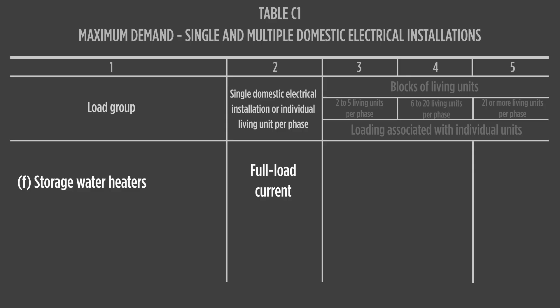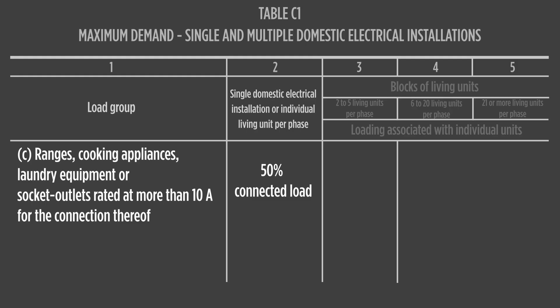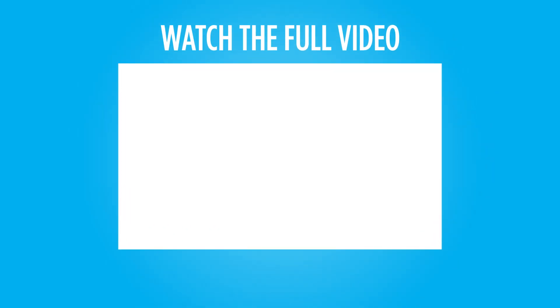Load groups C to M cover all other loads in a domestic installation, and it is the electrical worker's responsibility to place each load in the appropriate load group to calculate maximum demand. The current rating of any equipment installed will need to be determined so loading calculations can be made. Load group F is for storage hot water systems and allocates a full connected load for maximum demand calculation. Load group C, for cooking appliances and laundry equipment, allocates 50% of the connected load for maximum demand calculation. It is understood that these types of loads are not used continuously, and if full rating were to be applied, consumer main size would be unnecessarily large.